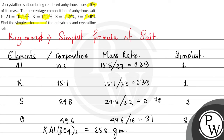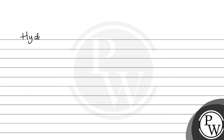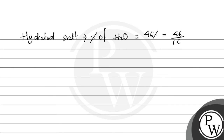Now we need to find out the simplest formula of the crystalline salt. Crystalline salt means the hydrated salt. To find out the simplest formula of the hydrated salt, firstly we need to find out the percentage of H₂O, which is already given as 46%. Let's assume the simplest formula of the hydrated salt is KAl(SO₄)₂ · XH₂O.